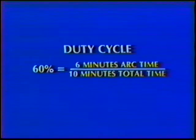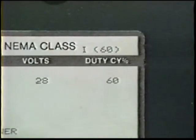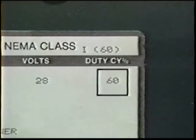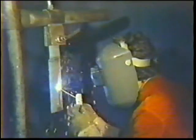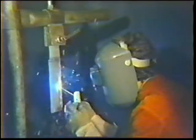Then the load must be off for a 4-minute rest period. Most industrial constant current machines are rated for a 60% duty cycle. This is sufficient for manual operations, such as shielded metal arc welding, where the welder must stop frequently to change electrodes.